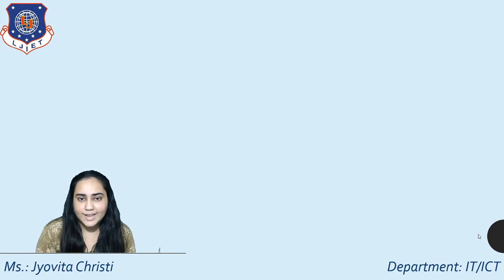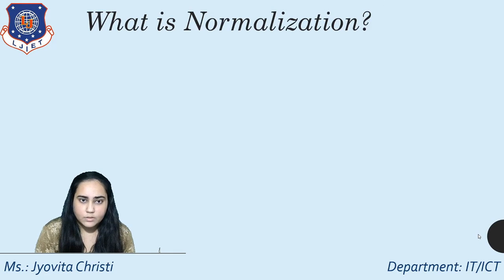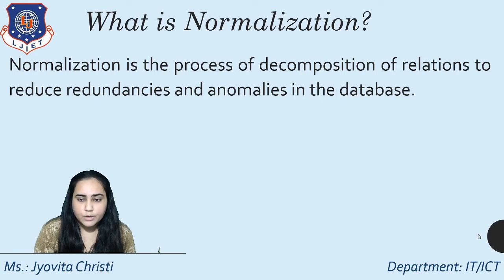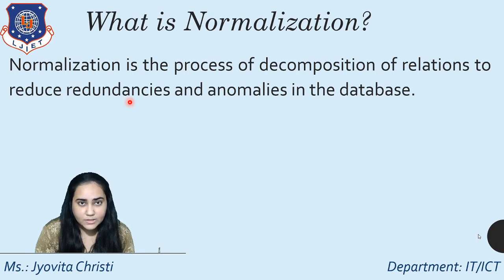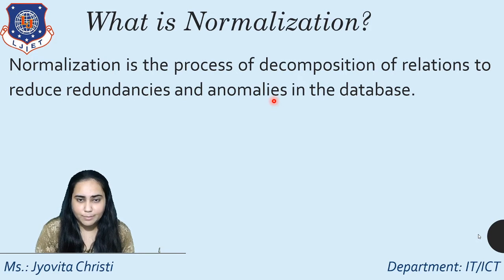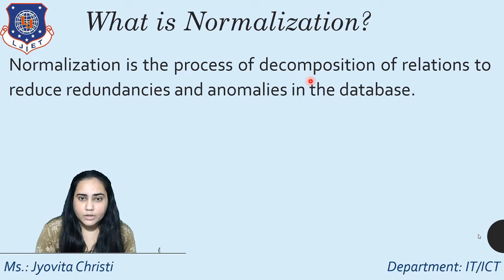Let's begin with understanding what normalization is. Normalization is the process of decomposition of relations to reduce redundancies and anomalies in the database. Redundancies mean a lot of duplication of data stored unnecessarily, which causes anomalies — problems where you are unable to update or delete values properly due to that duplication. Decomposition is where you break one table into many parts to perform normalization.